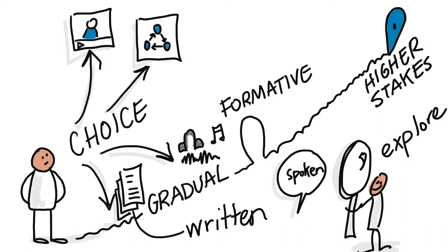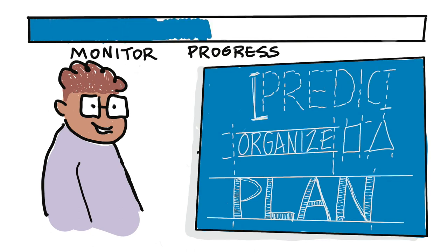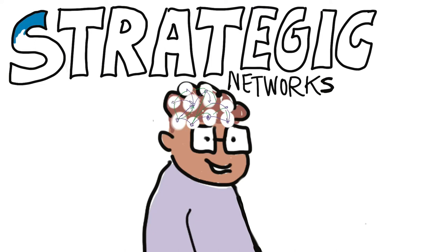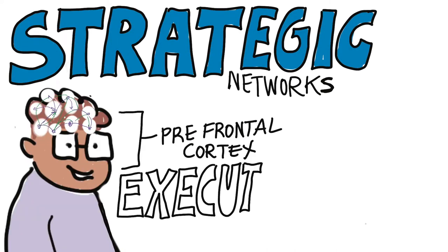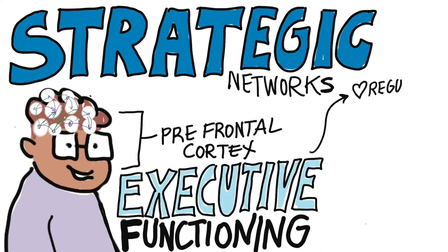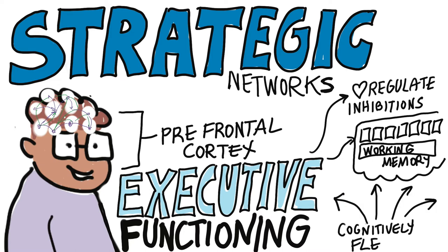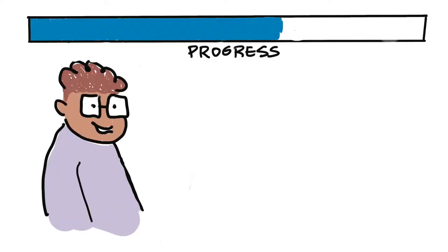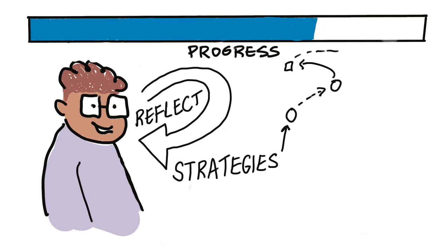Learners vary in their ability to monitor progress, plan, organize, and predict how long it takes to complete multi-step projects. Our brain's strategic networks include the prefrontal cortex, which is largely responsible for executive functioning. Executive functioning includes the ability to regulate inhibitions, operate working memory, and be cognitively flexible when managing complex tasks. As Chardon and Novak noted, executive functioning requires students to consistently reflect on their progress and be flexible enough to choose more appropriate strategies in an attempt to successfully complete the task.